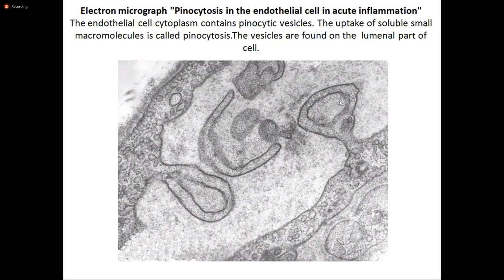Acute inflammation is of relatively short duration — several hours or a few days. Its main characteristics are the exudation of fluid and plasma proteins (edema), and the emigration of leukocytes, predominantly neutrophils. Acute inflammation has three main components: alteration in vascular caliber leading to increased blood flow; structural changes in the microvasculature that allow plasma proteins and leukocytes to leave circulation; and emigration of leukocytes from the microcirculation.